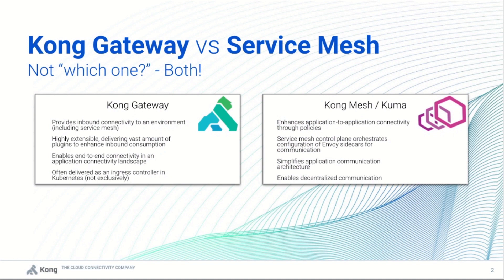A gateway provides you inbound access into an environment. It is the way that users and services are going to access the systems that you control. Ultimately, that gives you a central point to apply policy, to apply configurations, and the big thing about Kong's API Gateway — the plugin functionality. We can have all of that plugin functionality take place where the user or service is coming inbound to the environment.